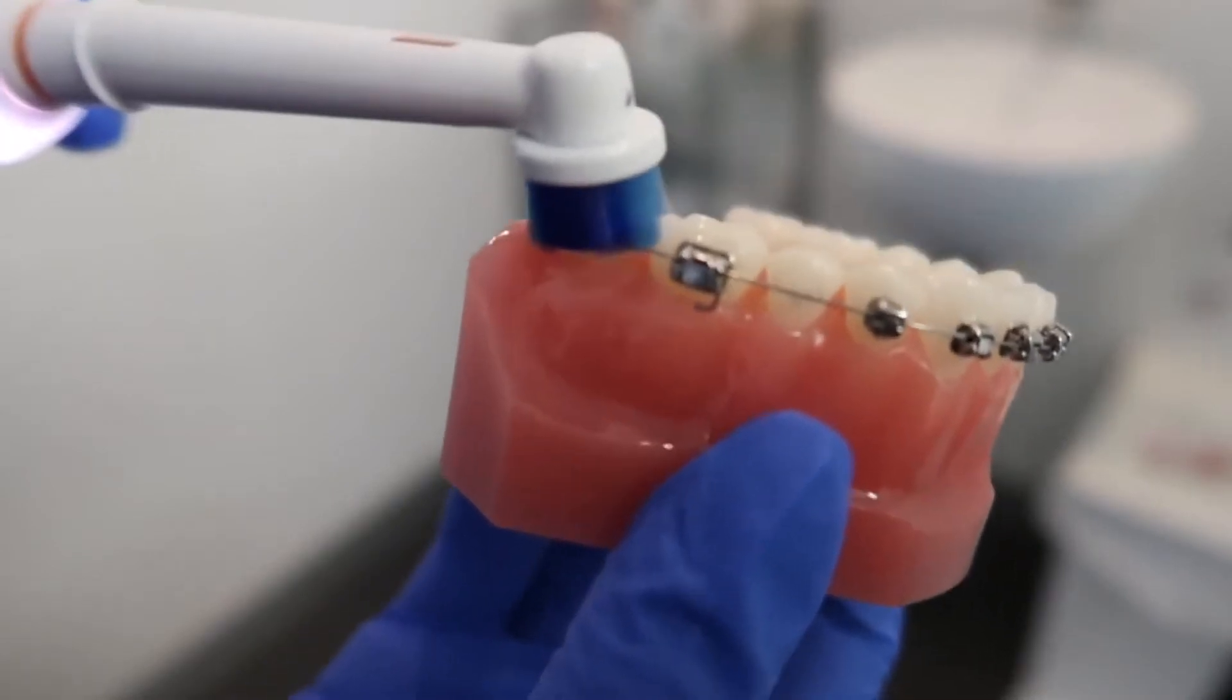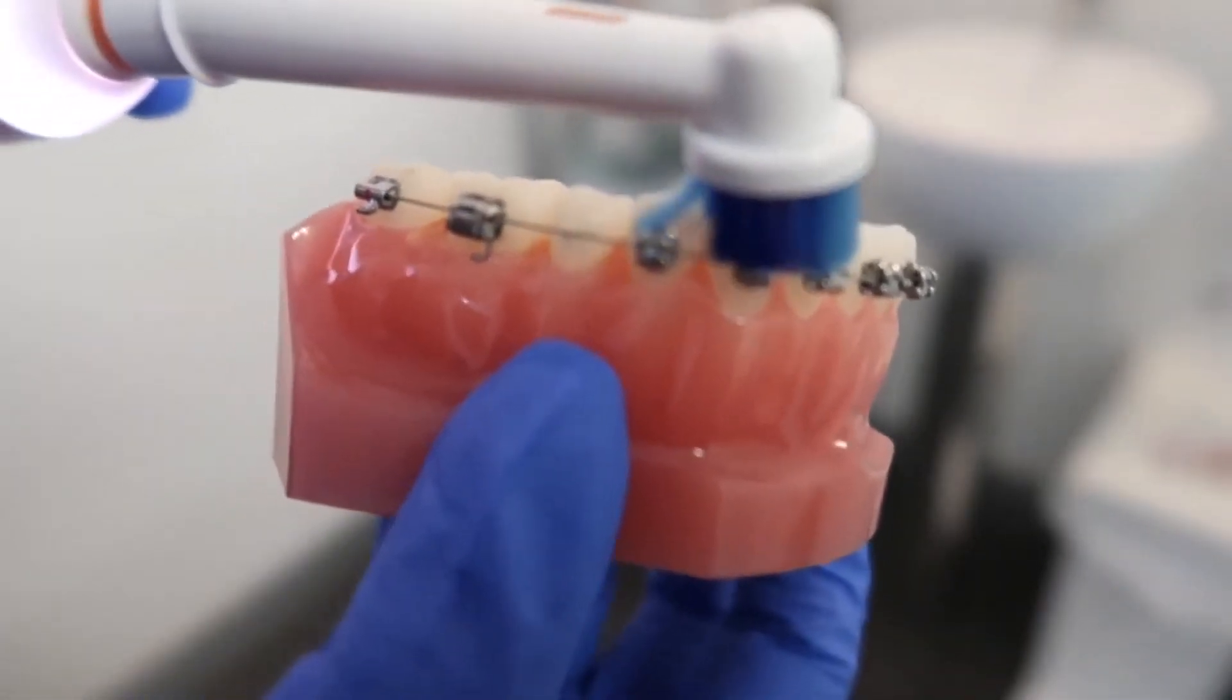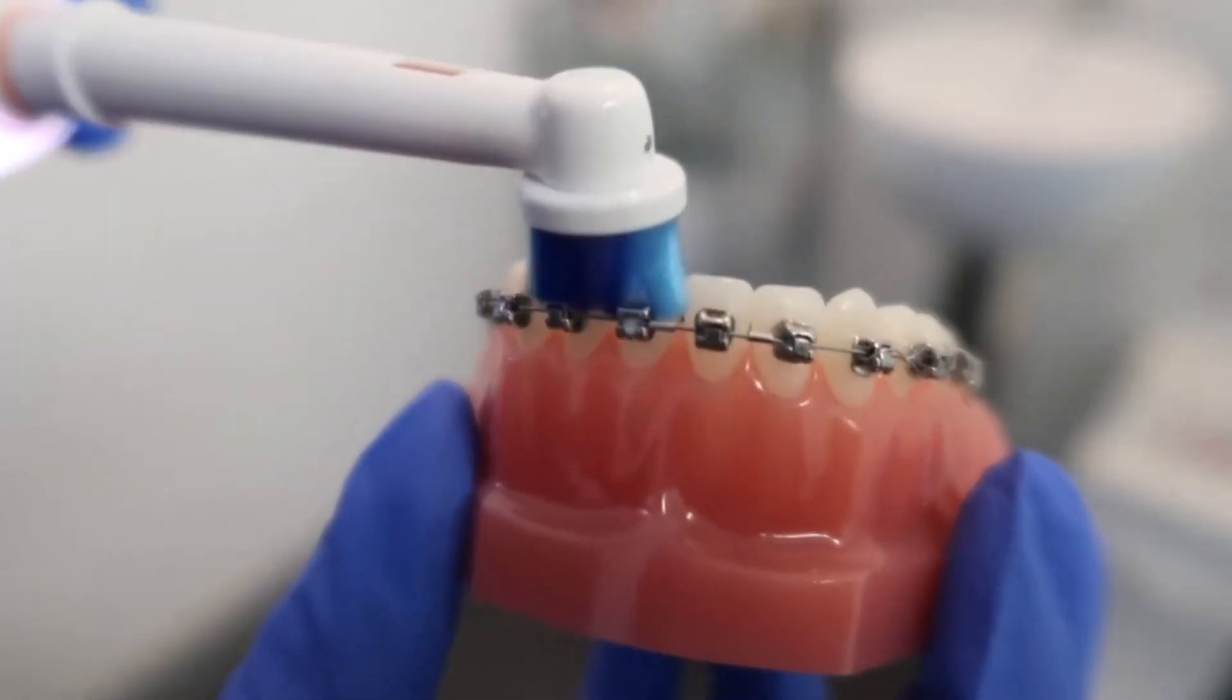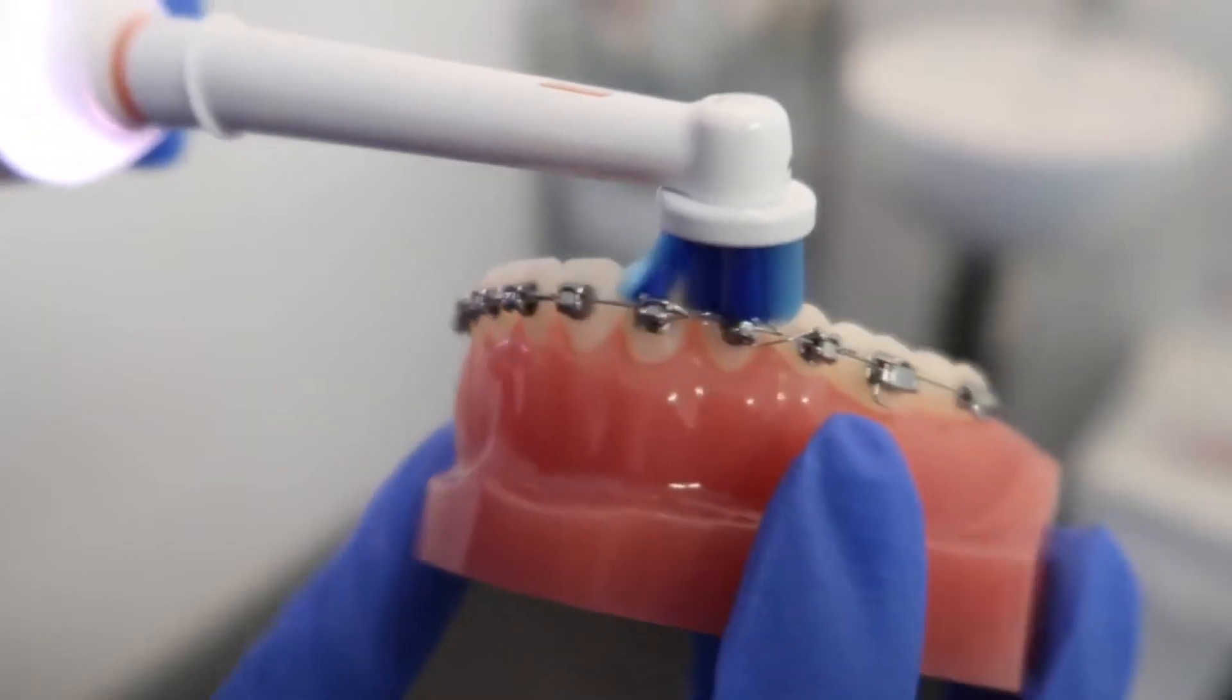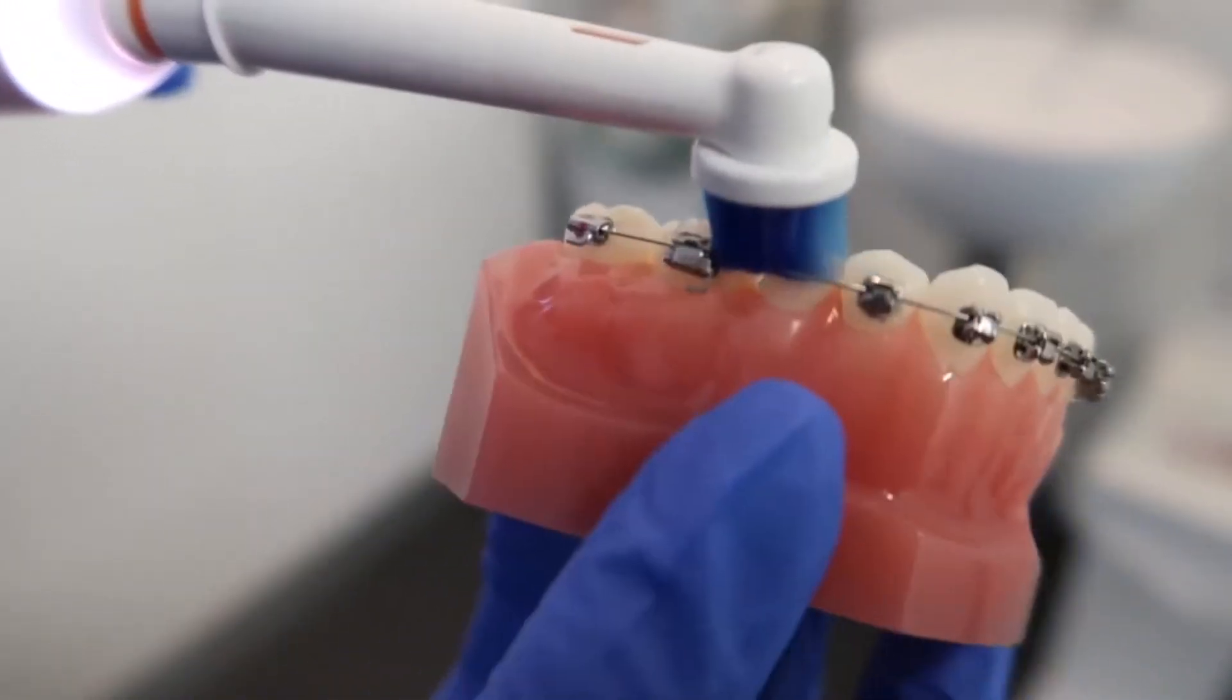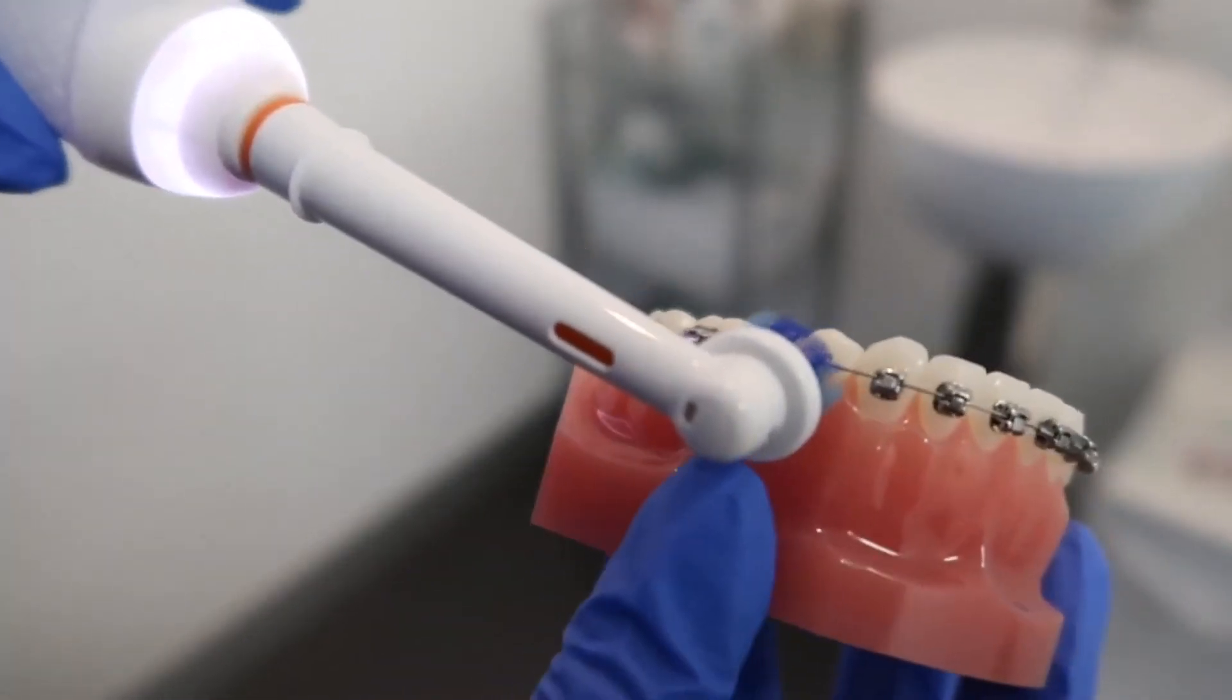Once you've done this, move on to cleaning the brackets of your braces. Brush on the tops first, and then follow this with brushing the underside of the brackets.